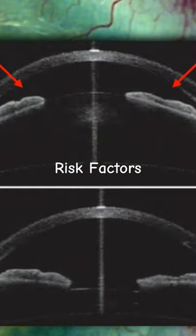Risk factors predisposing to phacomorphic glaucoma include hyperopia, which is associated with a smaller anterior chamber.